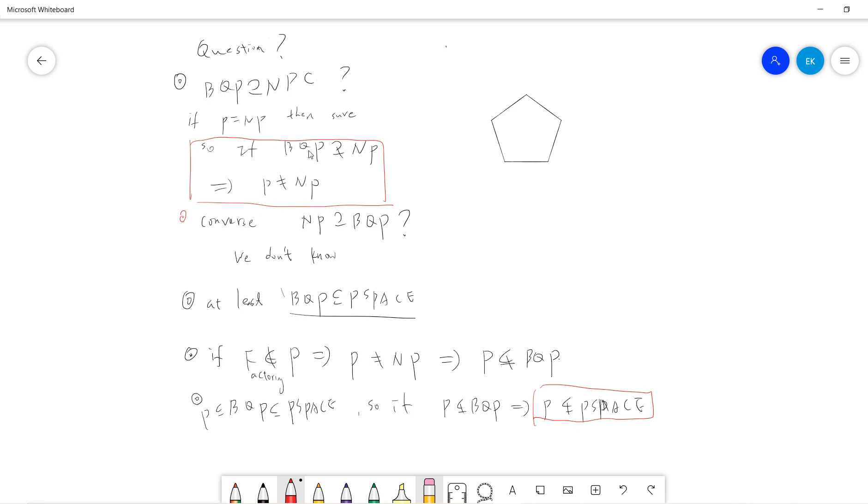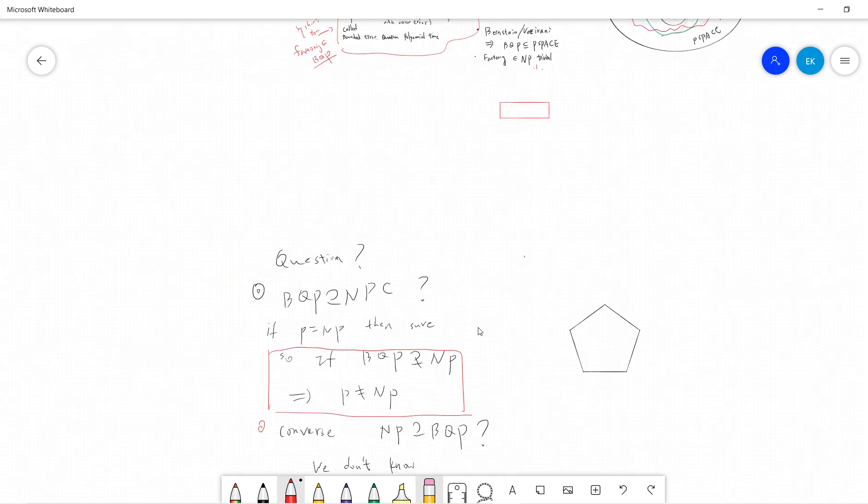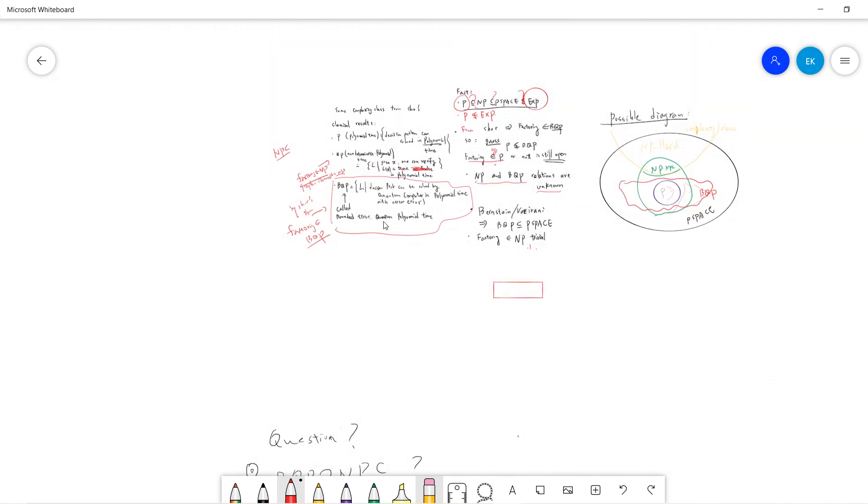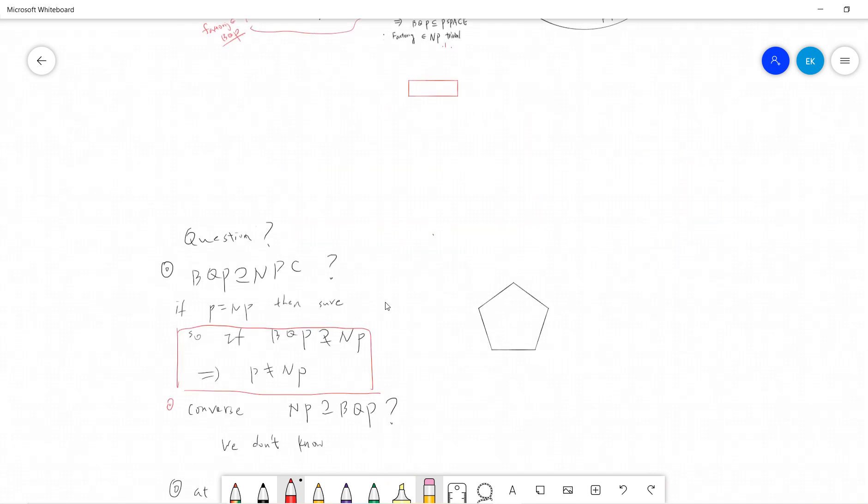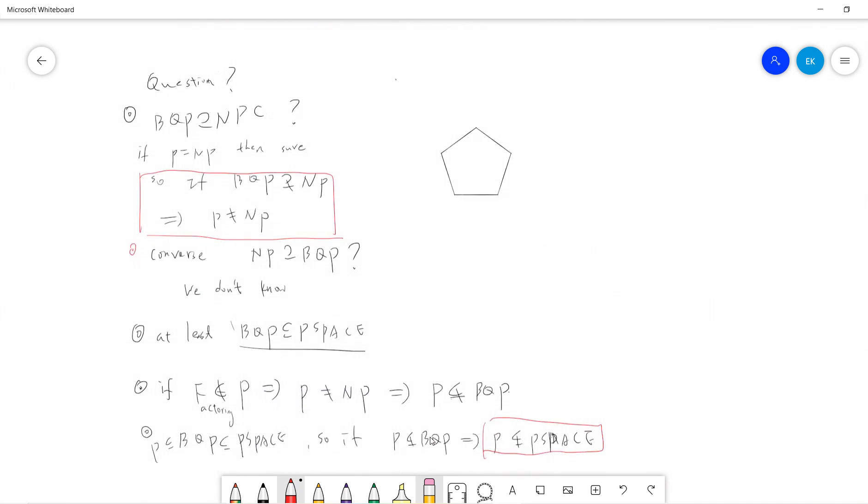The reason is that since P is here, P is strictly less than NP, but BQP always covers P. By definition, we know that we have these results. We always have BQP less than PSPACE and BQP covers P.